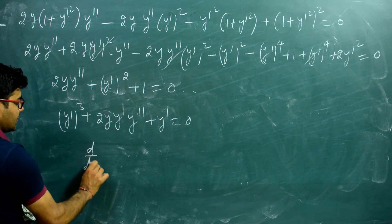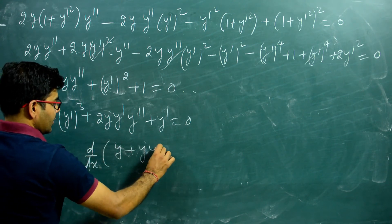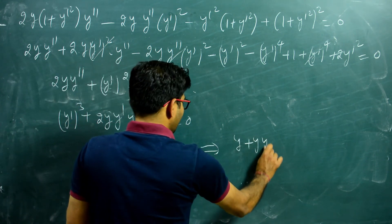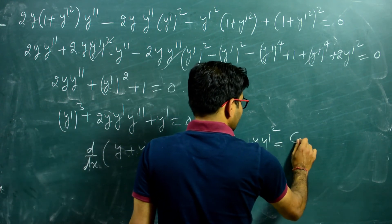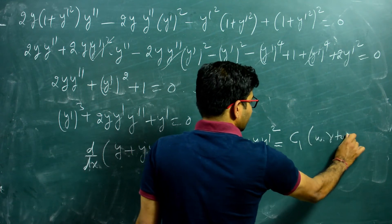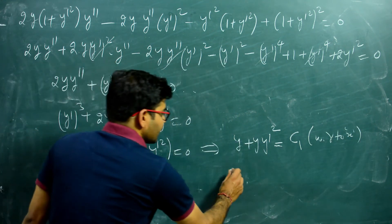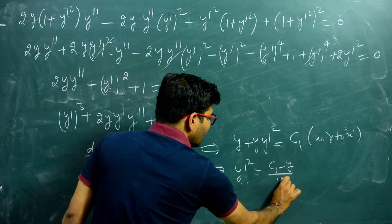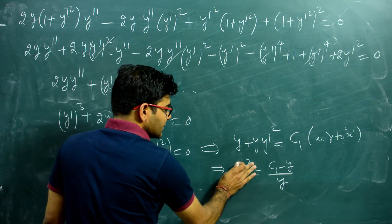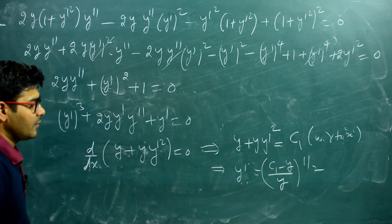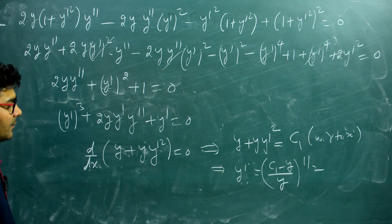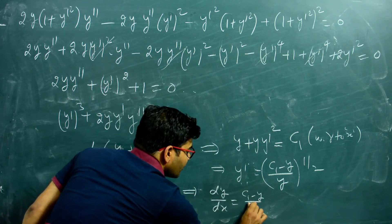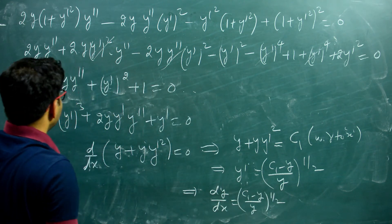Multiplying the entire equation by y', we get: y'³ + 2y·y'·y'' + y' = 0, which can be written as d/dx(y + y·y'²) = 0. This means y + y·y'² is a constant, say c₁, with respect to x. This can be rewritten as y'² = (c₁ − y)/y, so y' = √((c₁ − y)/y). This is a first-order differential equation to be solved by variable separation.